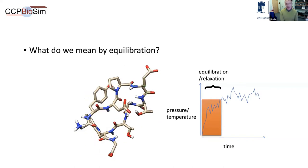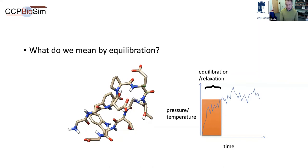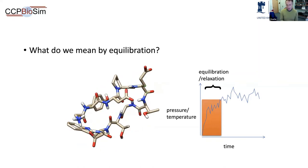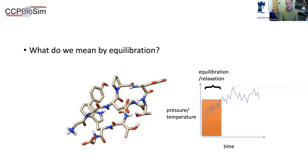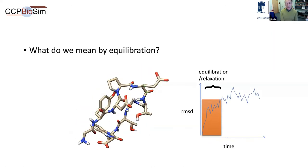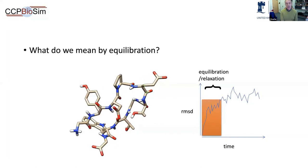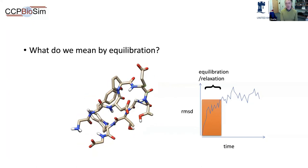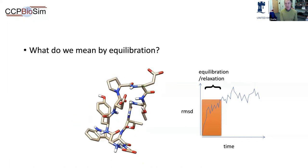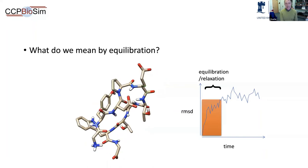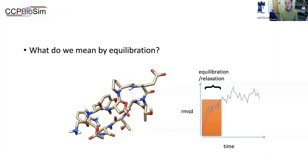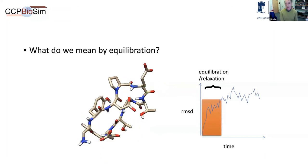If you look at molecular dynamics simulation papers, you'll see graphs like that to talk about how the group has looked at this question of equilibration. Very often what you see plotted is not temperature or pressure but RMSD — the root mean square deviation of atoms from the starting conformation. The idea is it rises quickly and then plateaus, and people say things are equilibrated. My main purpose in this session is to try and convince you that this is not a good way of looking at equilibration.